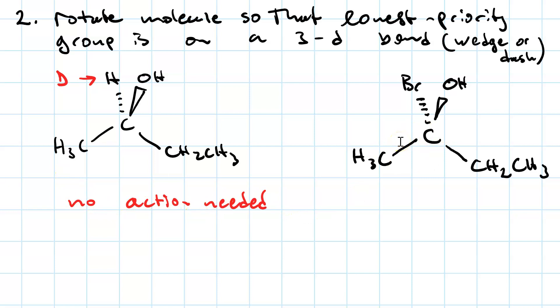What about this molecule? Well, our priorities are bromine has the highest atomic number, then the hydroxyl, then it's going to be the ethyl, and then the methyl is D, and uh-oh, we've got our lowest priority on a flat bond. So that means we need to do something.